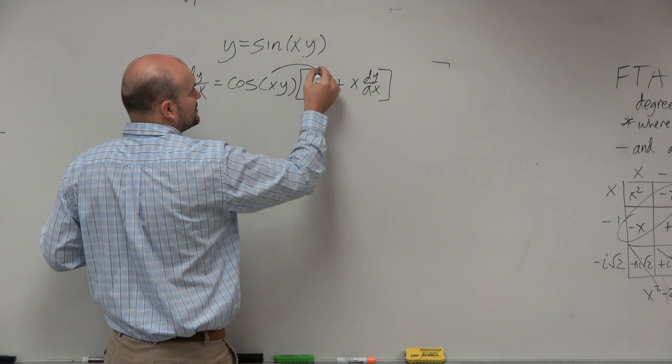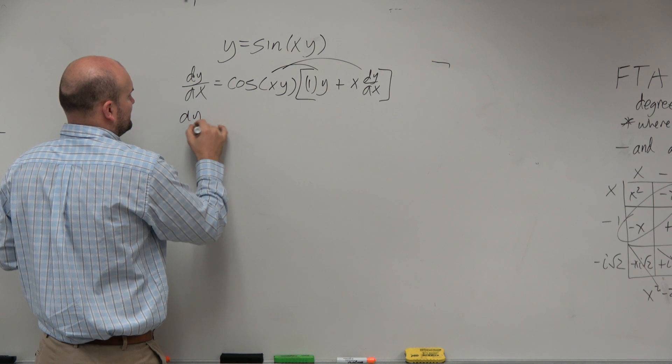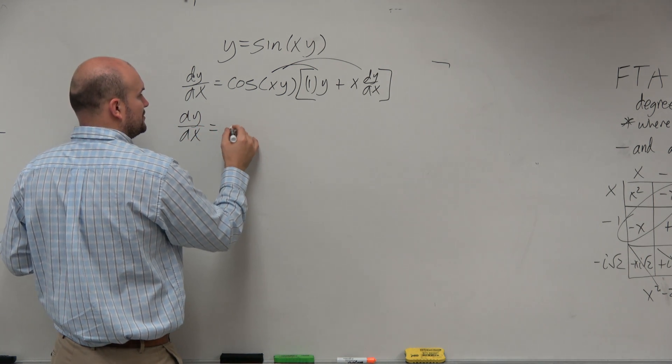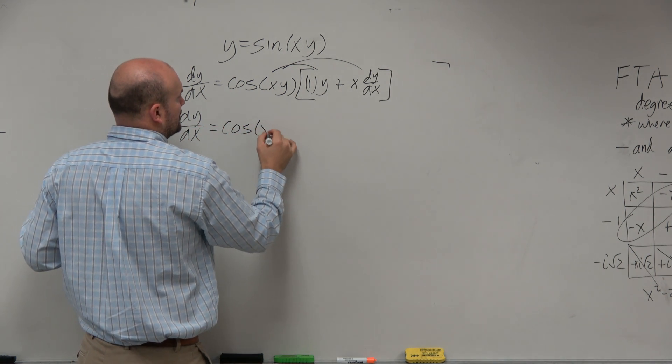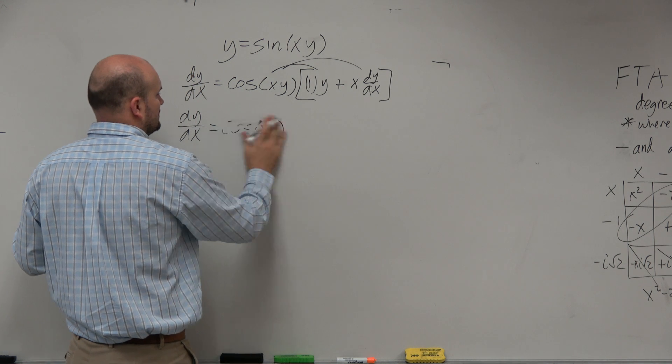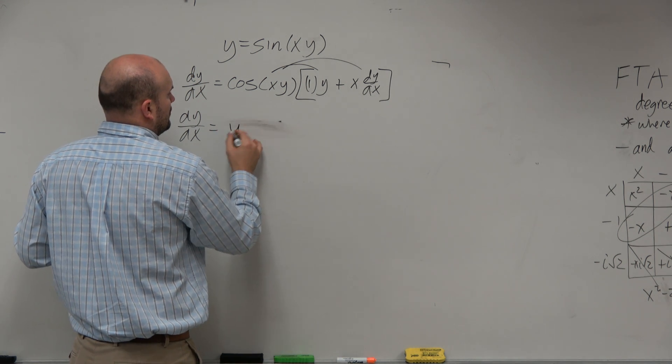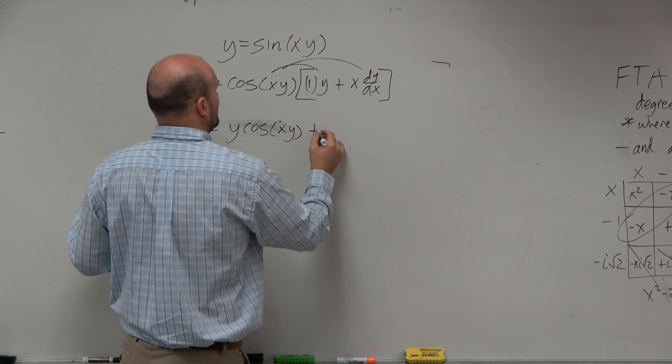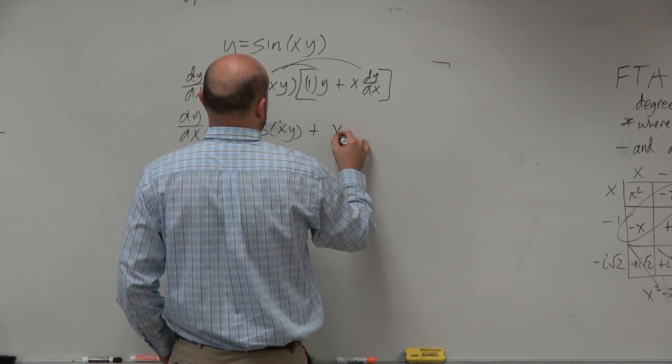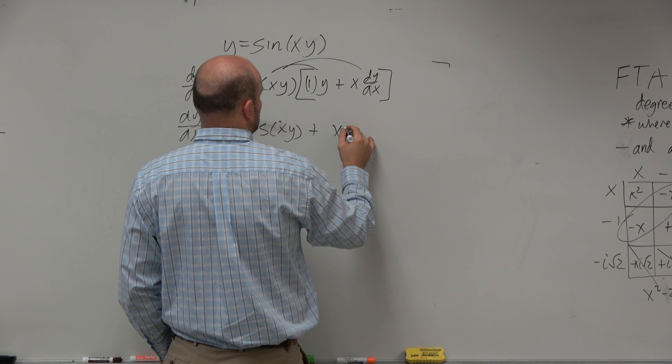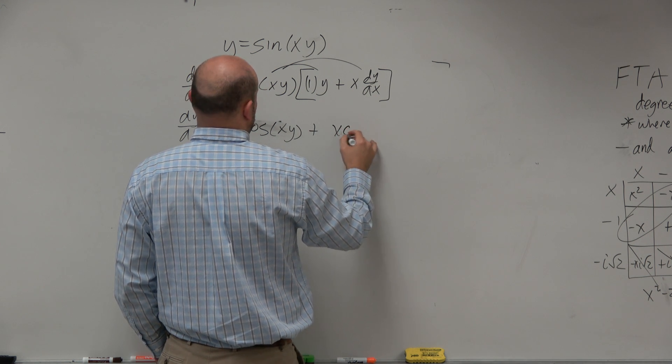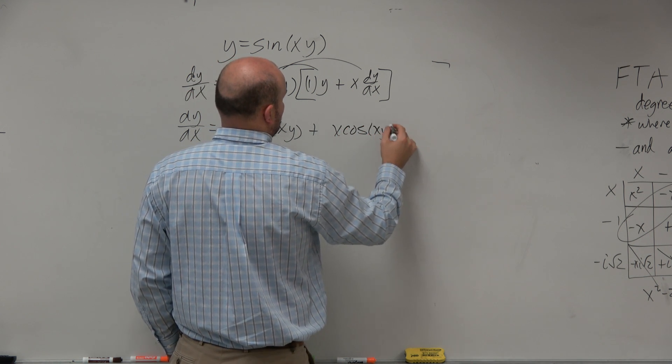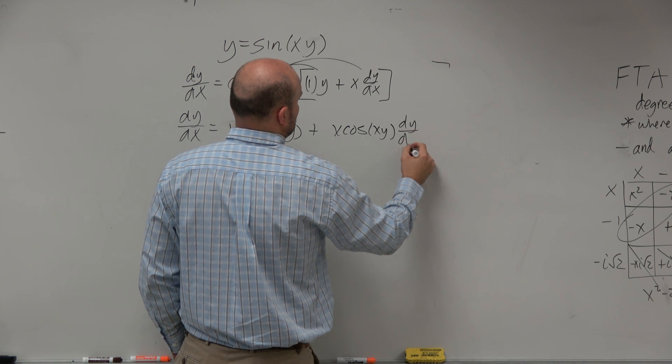Now, notice we can distribute here. So I have dy/dx equals cosine of xy. Let's write that in front: y cosine of xy plus x cosine of xy dy/dx.